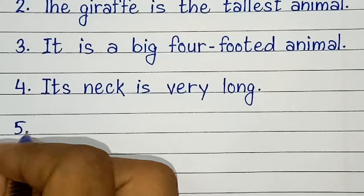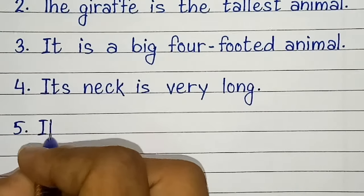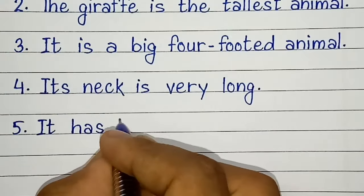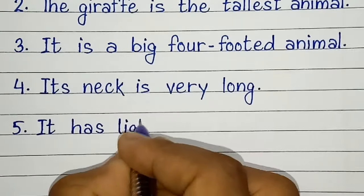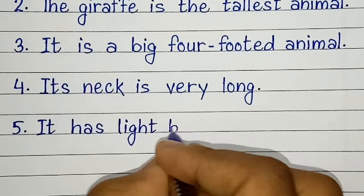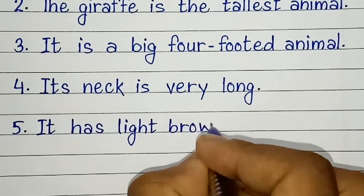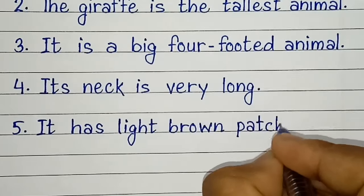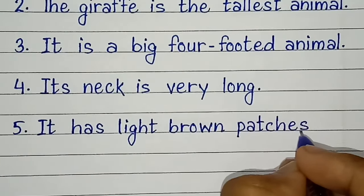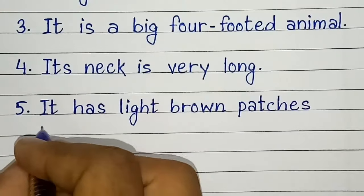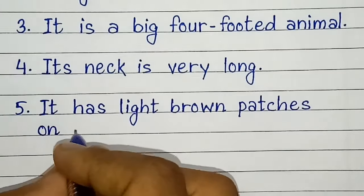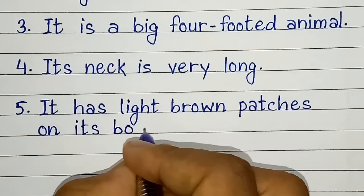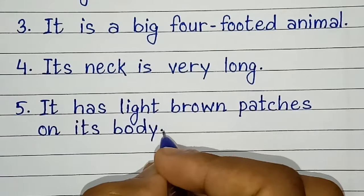Fifth line is, it has light brown patches on its body.